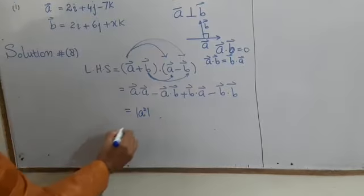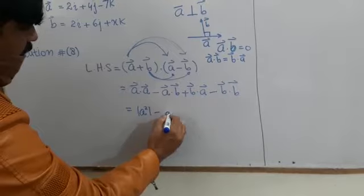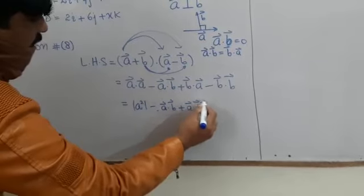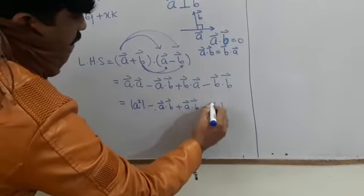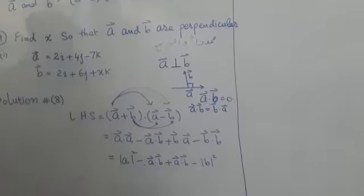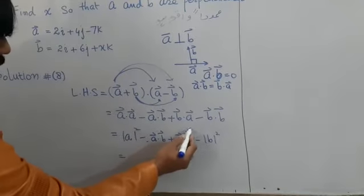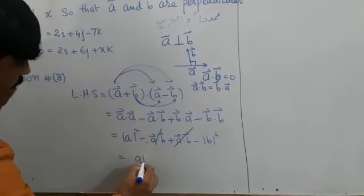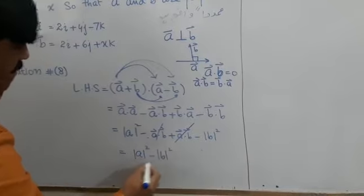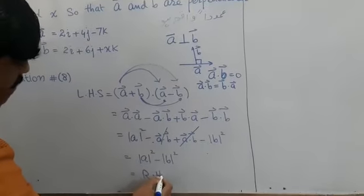This is the magnitude squared. A·B plus B·A cancel out, giving us |A|² minus |B|². This is how we do this.